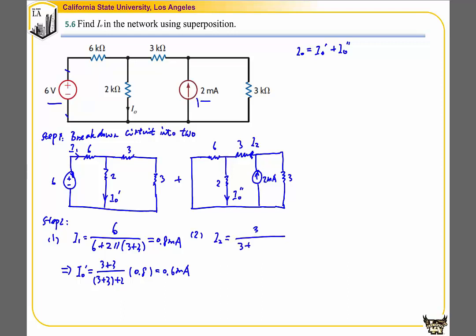I2 equals 3 over the overall resistance—that is 3 plus 3 plus 6 and 2 in parallel—times the overall current of 2 mA. That gives us 0.8 mA.